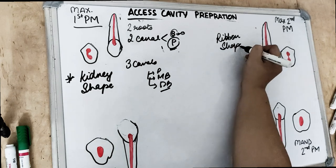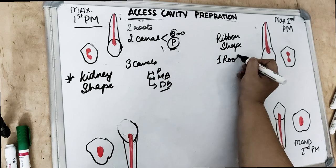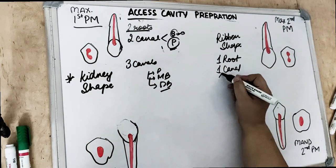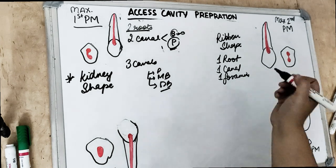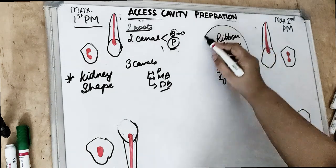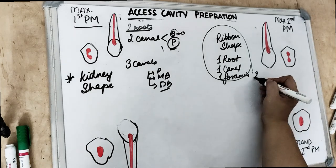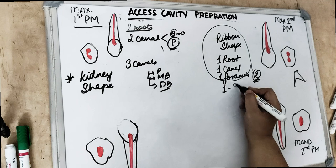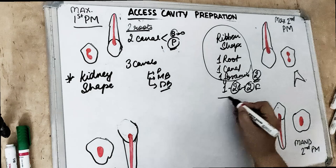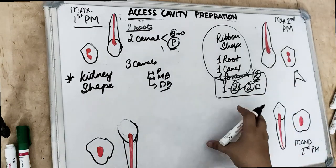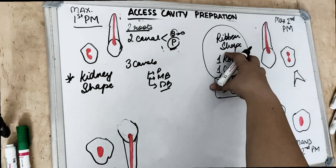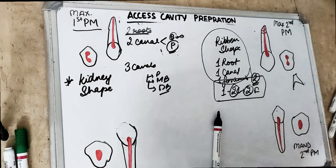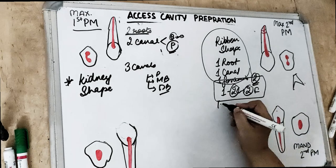The maxillary second premolar canal looks more like a ribbon shape. These teeth have one root — every premolar except the maxillary first premolar has one root. So one root, one canal, one foramen, which is Vertucci type 1. However, there may also be Vertucci type 2 — one pulp chamber dividing into two canals exiting as two foramina. There are also lateral canals visible in the second premolar — 59% of the canals have lateral canals, and 1.6% in the furcation area.